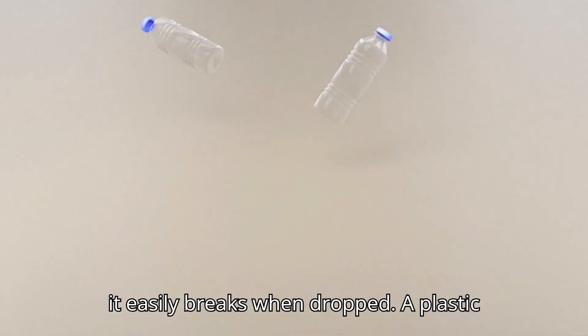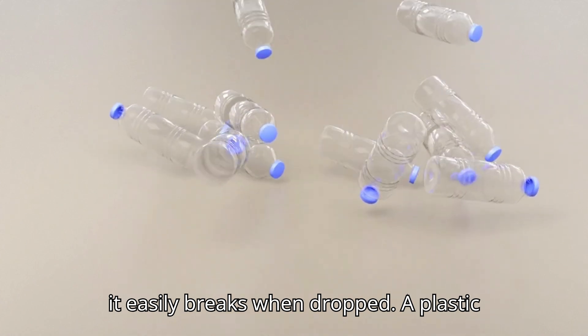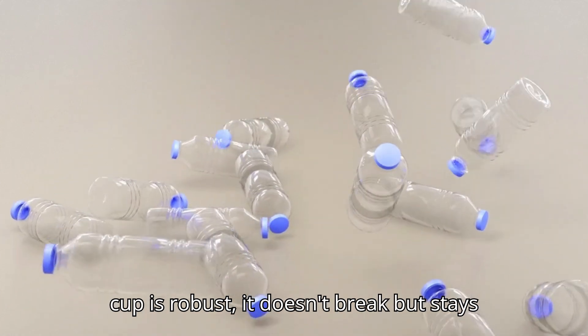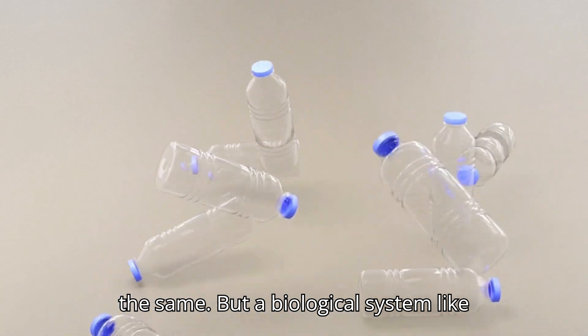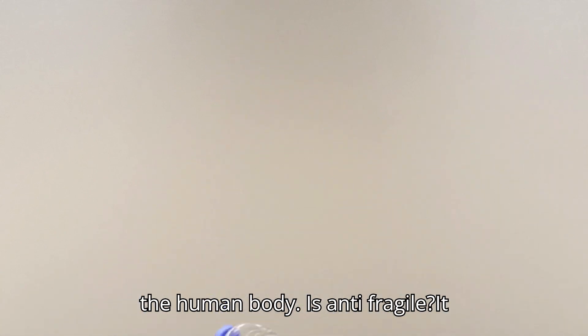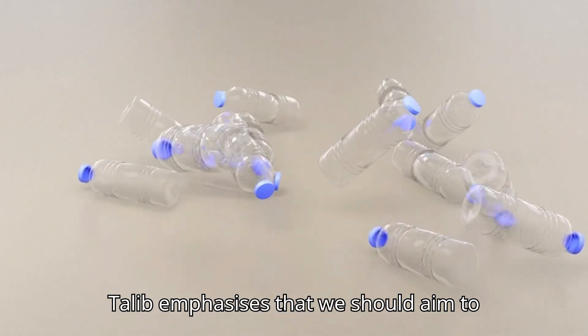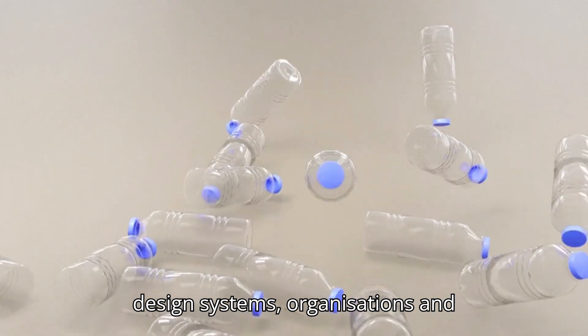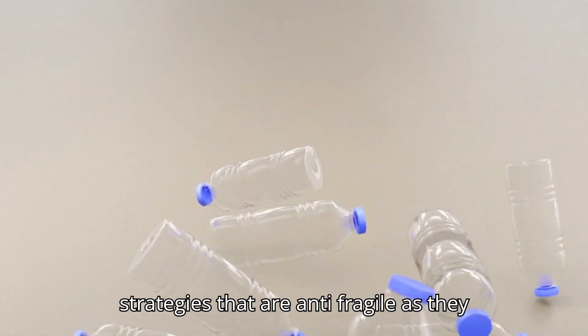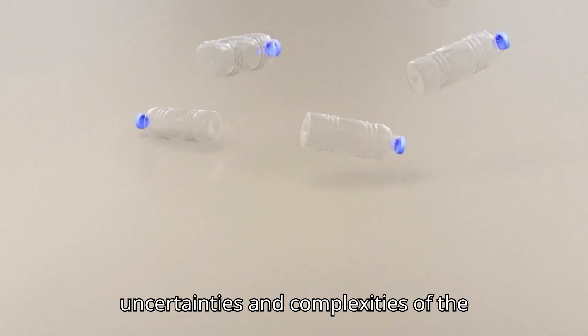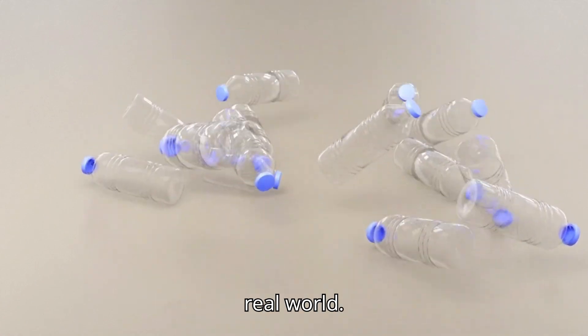For instance, a porcelain cup is fragile. It easily breaks when dropped. A plastic cup is robust. It doesn't break but stays the same. But a biological system, like the human body, is anti-fragile. It gets stronger through stress. Taleb emphasizes that we should aim to design systems, organizations, and strategies that are anti-fragile, as they are better suited to handle the uncertainties and complexities of the real world.